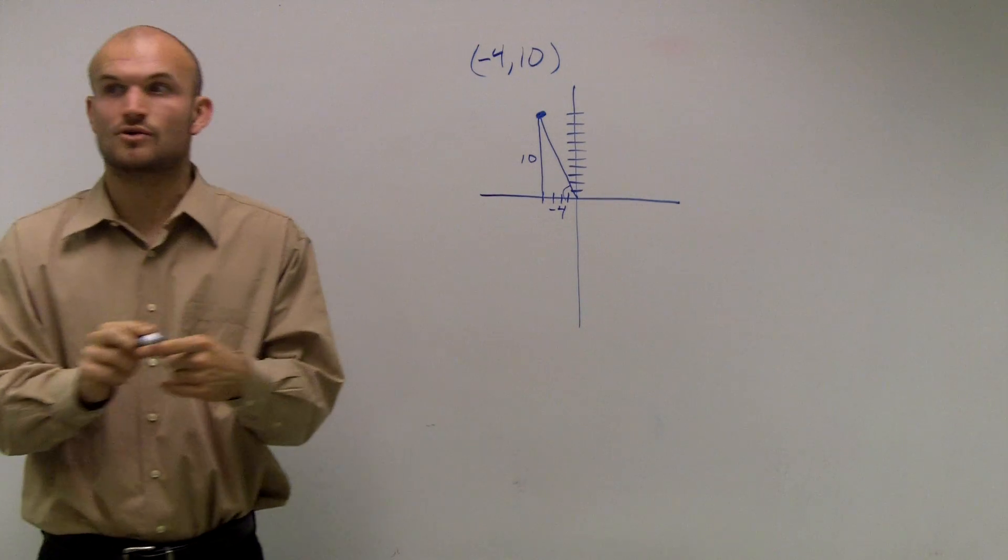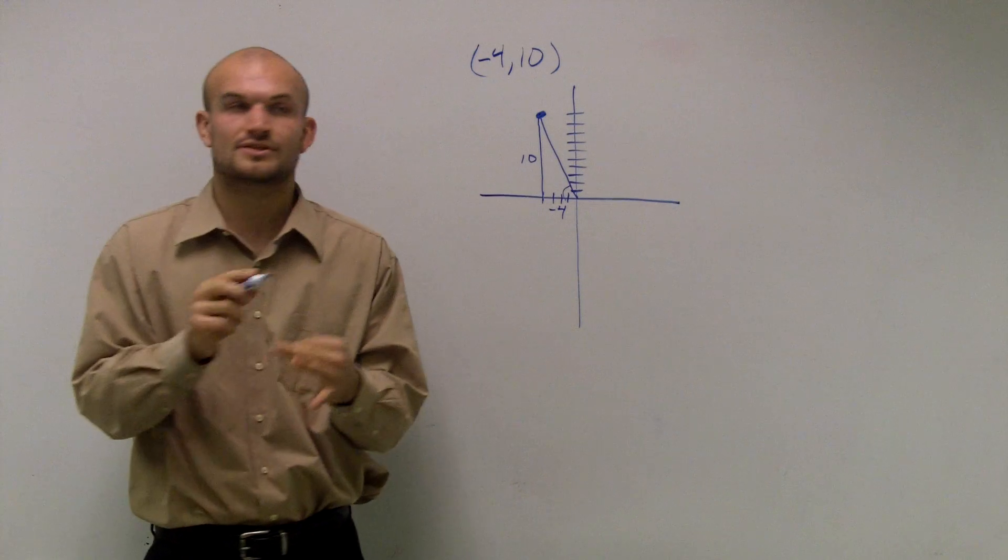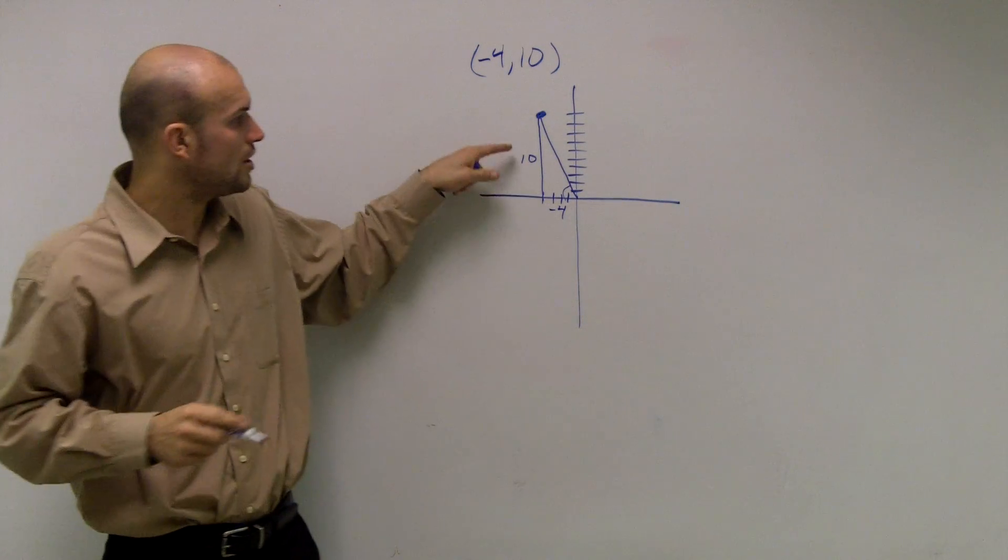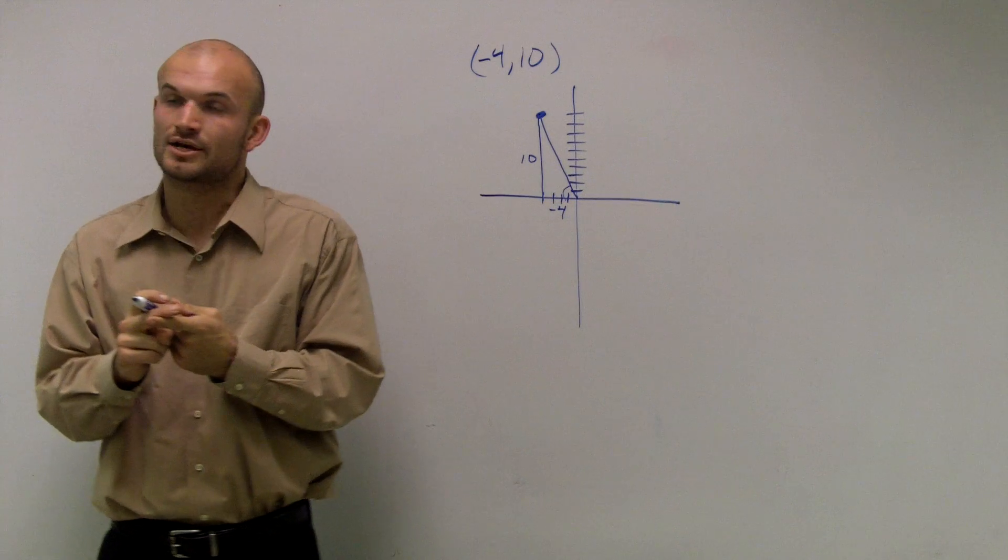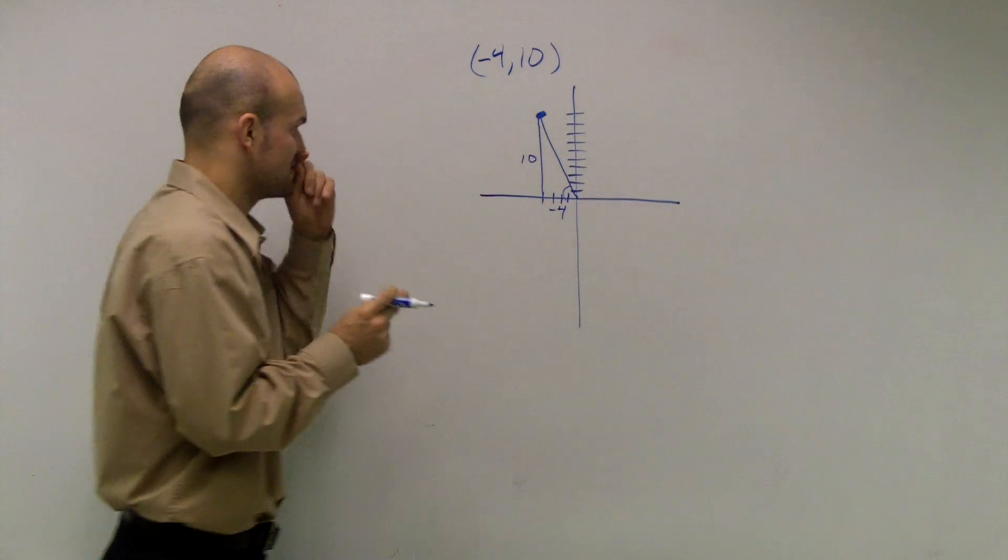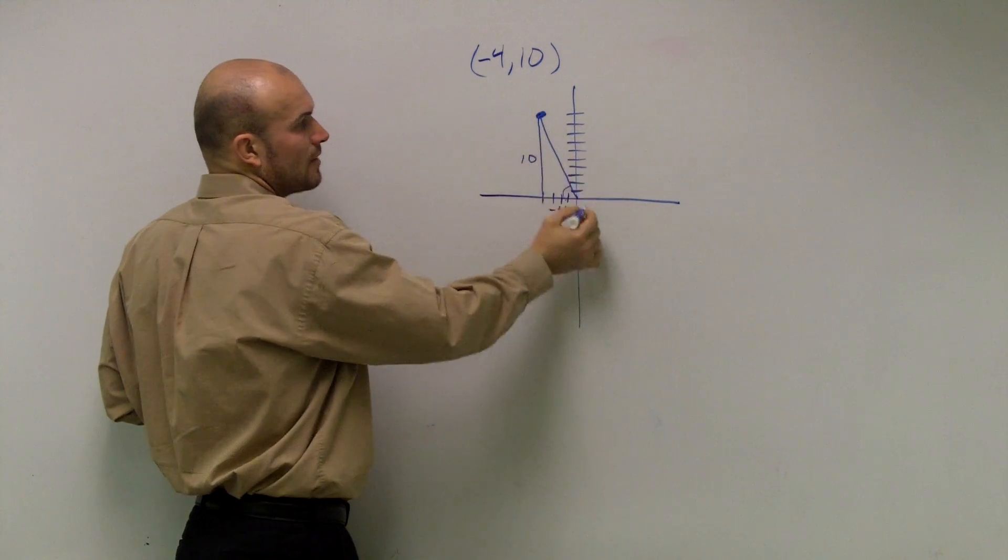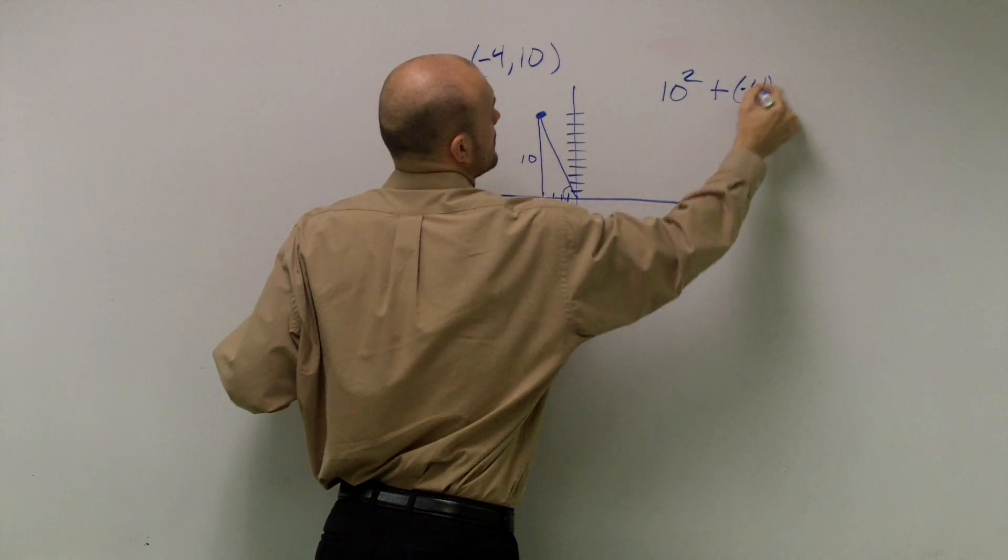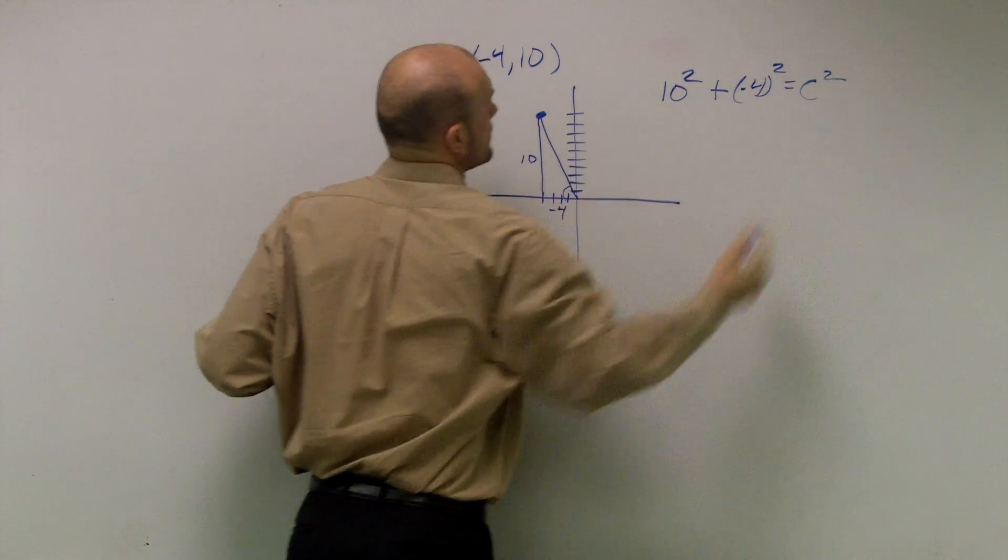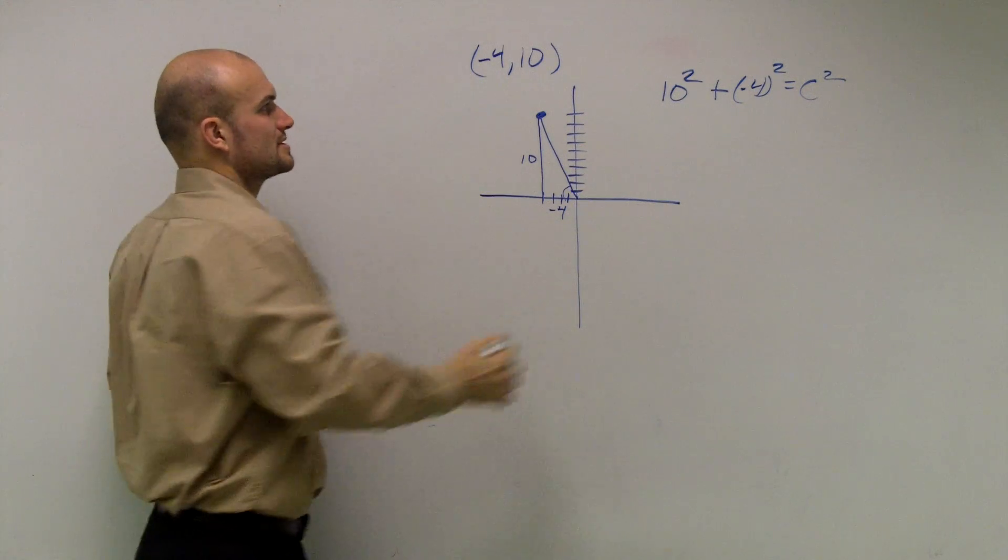So remember, we talked about sine, cosine, tangent, cotangent, cosecant, and secant. We can all use a right triangle by knowing our hypotenuse and our two legs, the opposite and the adjacent. So I don't know right now what my hypotenuse is. So I can use the Pythagorean theorem to figure out what my hypotenuse is.